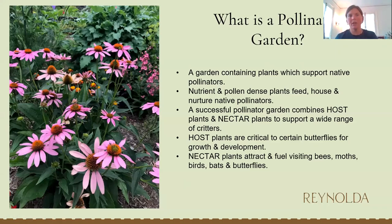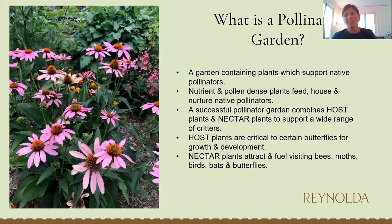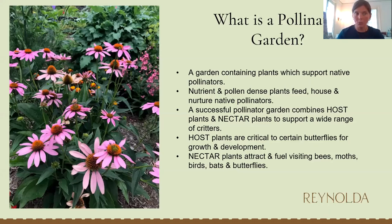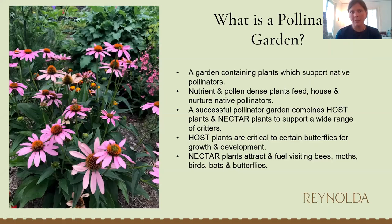A successful pollinator garden has two key components: nectar plants and host plants. Host plants are hosts for specific butterflies, and most butterfly species are specialists, meaning there is only one or two different types of plants that they feed off of and need to survive. The most common example is milkweed and monarch butterflies. Nectar plants provide fuel for visiting bees, moths, birds, bats, and butterflies. We don't have bats around here as pollinators as much as in more tropical places, but it's important to remember that they are pollinators as well.